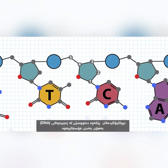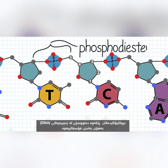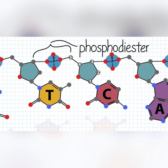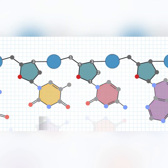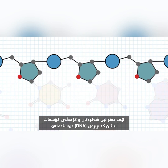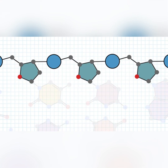Nucleotides attach to each other in the DNA strand by phosphodiester bonds. The phosphate group of one nucleotide binds to the 3' oxygen of the neighboring nucleotide. Thus, we can see that the sugars and phosphate groups make up the DNA backbone.